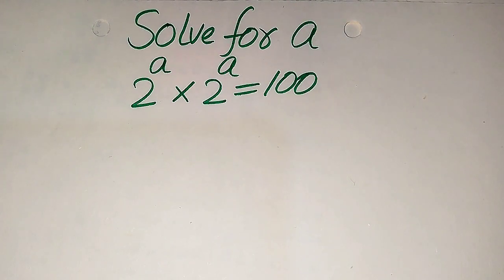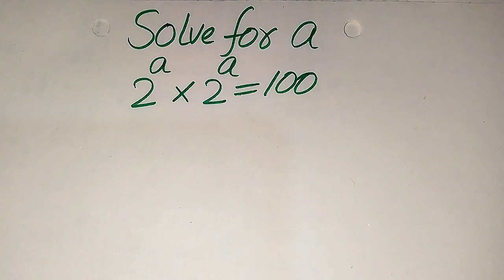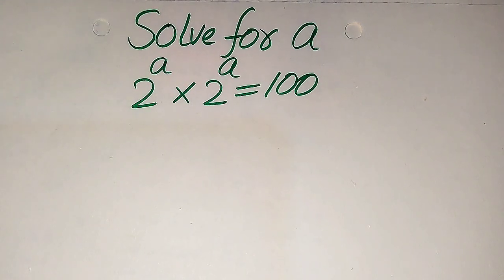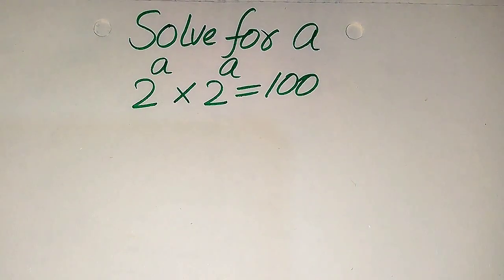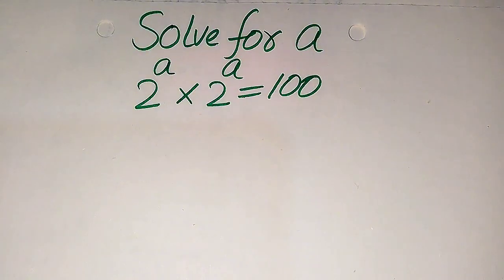Hello everyone. How to solve this problem for the values of a, if we have 2 to the power of a multiplied by 2 to the power of a is equals to 100, and we solve this problem for all the values of a.